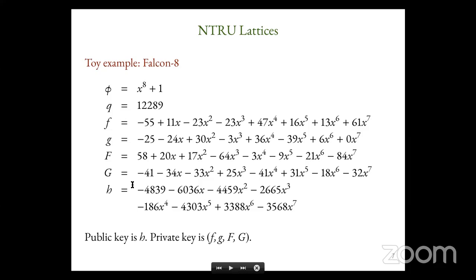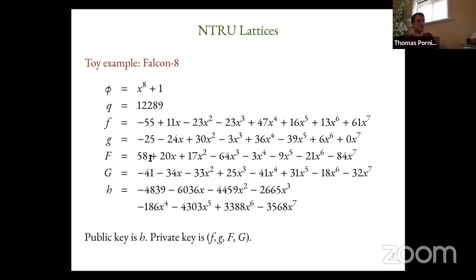Question from Chris: You have little f, little g, and then big F, big G which are somewhat larger. Usually a good basis has all vectors roughly the same norm — that's not the case here, they're off by some factor. Is that okay? Answer: When doing key pair generation there is a threshold to meet. If we find big F and big G above the threshold, we just scrap small f and small g and start again. The threshold is some Falcon magic I do not fully understand — the other Thomas knows, so I just trust him.